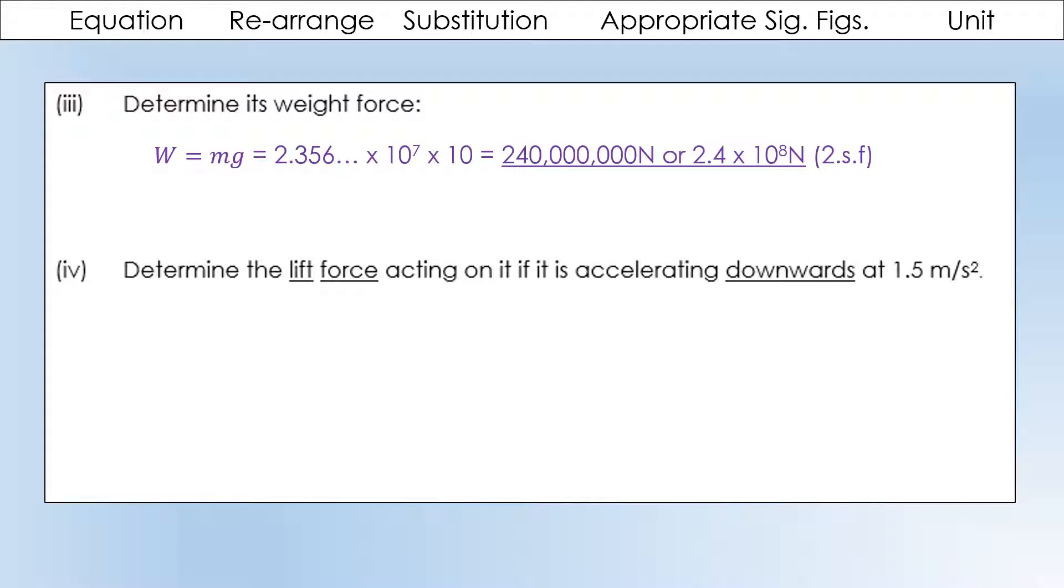So, determine the lift force acting on it, if it's accelerating downwards at 1.5 meters per second squared. So, the first thing I'm going to do is figure out what the resultant force would be that causes that acceleration. So, we can plug our values in. And we can see we need a resultant force, 3.5 times 10 to the 7 newtons. So, the resultant force is going to be equal to the weight force minus the lift force. Because the weight force acts downwards, the lift force acts upwards, and the difference between them would be the resultant force.